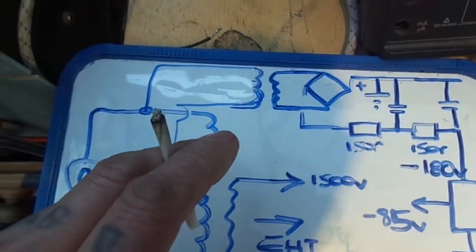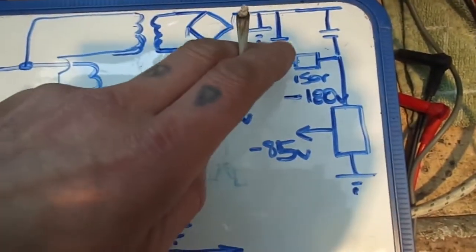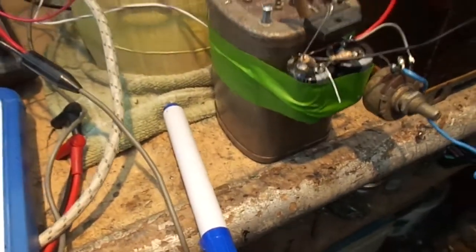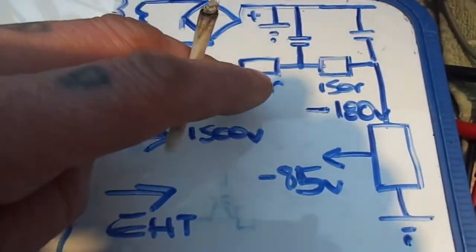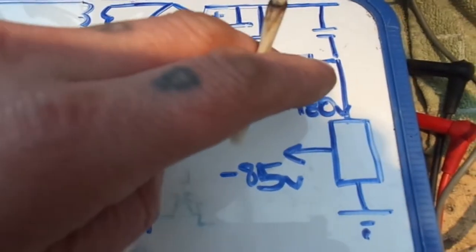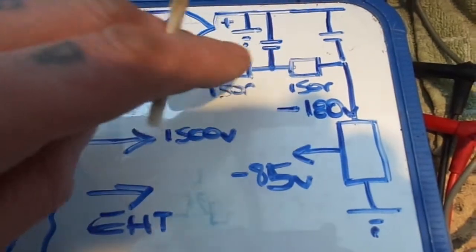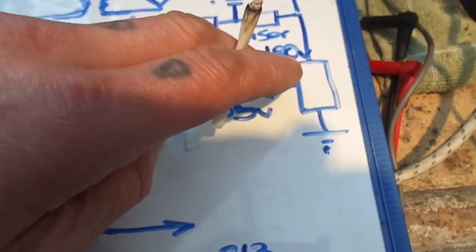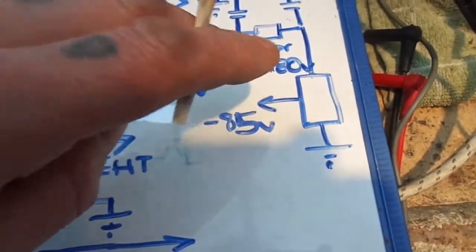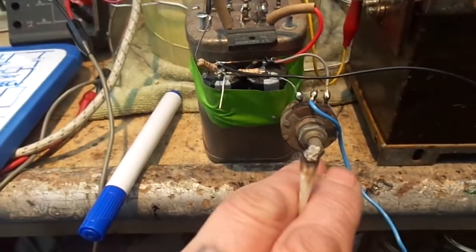Also connected to the mains here is this transformer, which is our negative bias supply. So that's a bridge rectifier. I think we've got a couple of, what are they, 150 microfarad maybe something like that. So I've got 150 ohms, 150 microfarad, another 150 ohms, another 150 microfarad.